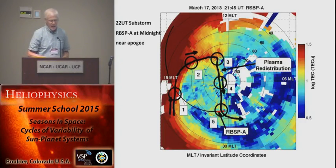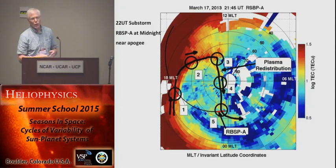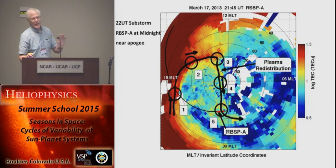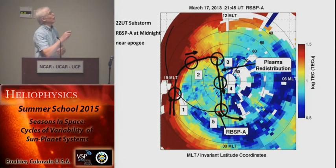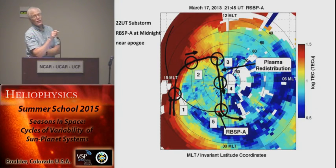Here's a schematic similar to the drawing of the Dungey cycle done with the old Chatanika radar, but now we're looking at plasma rather than electric fields. You have to remember the connection between the two. This is a snapshot — 10 minutes worth of data — a snapshot from March 17th, 2013, where we have much better high-latitude coverage.